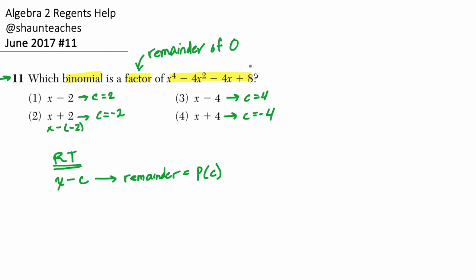What am I talking about? Well, in our case, P of x is our dividend, and it's our polynomial. In this case, x to the 4th minus 4x squared minus 4x plus 8. This is our polynomial. And the remainder when dividing by x minus c is just equal to P of c. So we're going to plug c into this polynomial and see what the output is. That's the remainder.